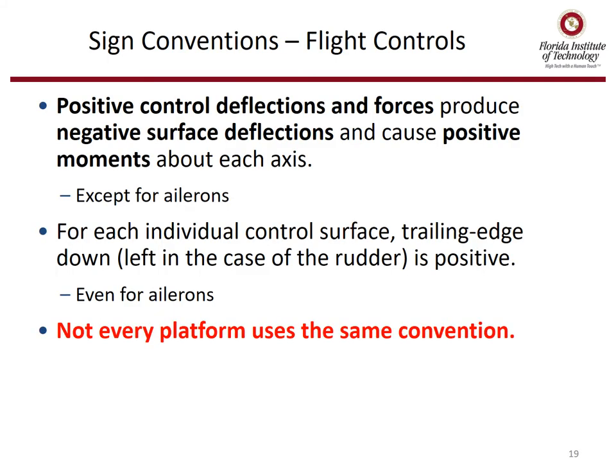For flight controls, we have to define a sign convention. Positive control deflections and forces produce negative surface deflections and cause positive moments about each axis, with the one exception of ailerons. For each individual control surface, trailing edge down — or left in the case of the rudder — will be positive, even for ailerons. Make sure in your organization you use their definitions for flight control sign conventions.